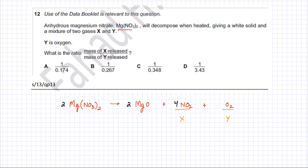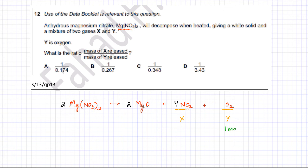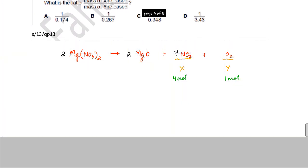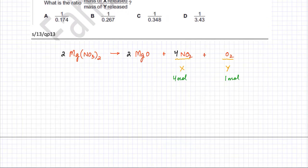The question wants us to give the ratio of the mass of X released to the mass of Y released. Since we are talking about ratios, if you look at the equation, one mole of oxygen gas is produced when four moles of NO₂ gas are produced. So the ratio in which these gases are produced is 1:4.